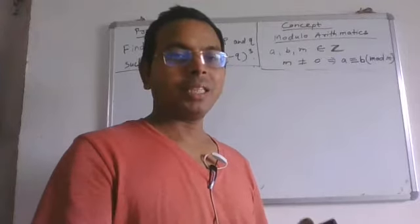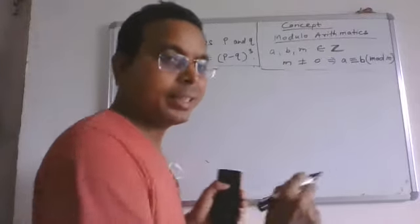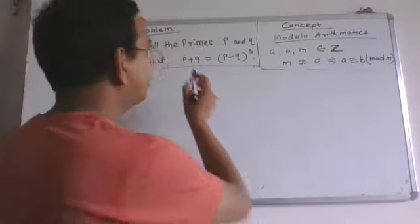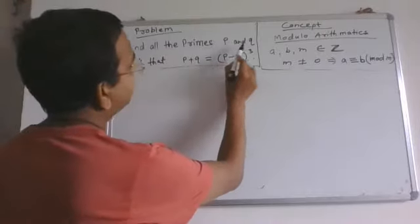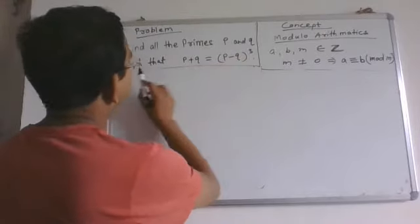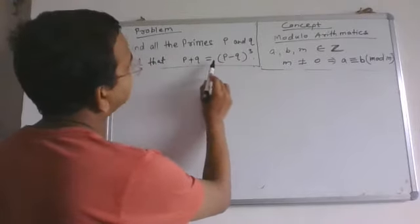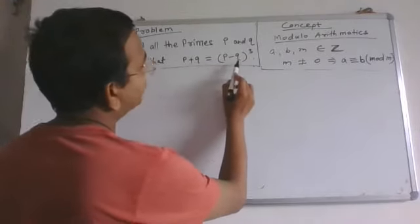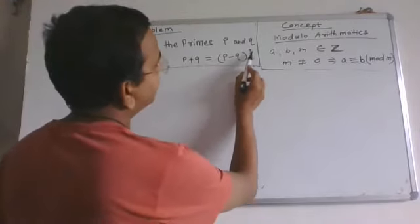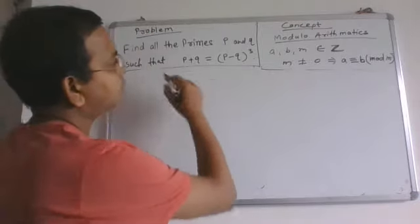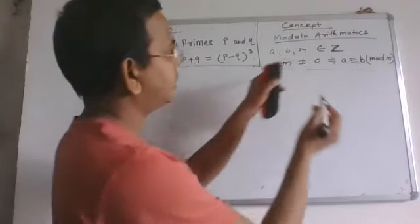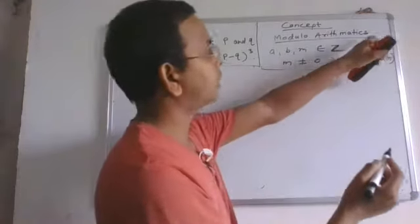Hello friends, welcome to my channel. Here is the problem: find all the primes p and q such that p plus q is equal to p minus q to the power 3. To solve this problem, the concept is modulo arithmetic.